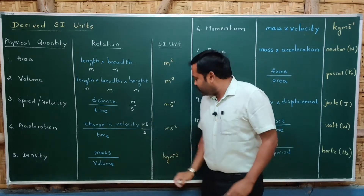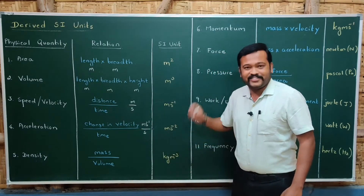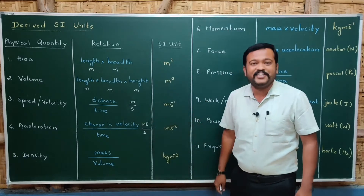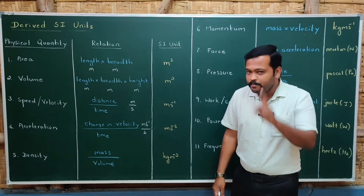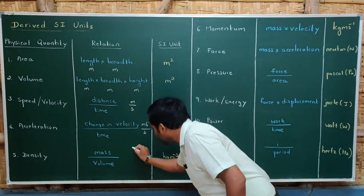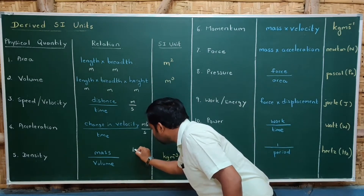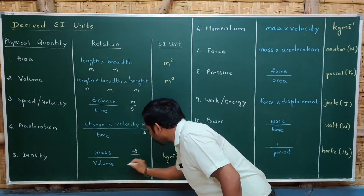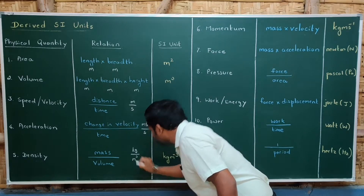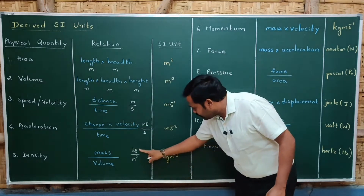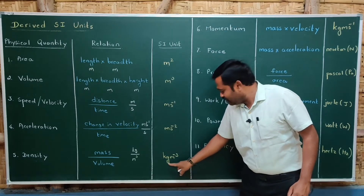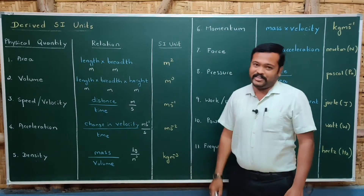So the SI unit of acceleration is meter per second squared (m/s²). Moving on to density — the formula is mass divided by volume. The SI unit of mass is kg and the SI unit of volume is cubic meter, so the SI unit of density is kg per cubic meter (kg/m³).